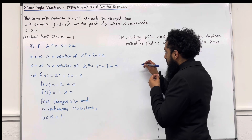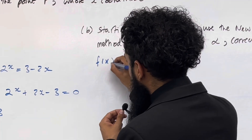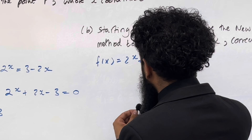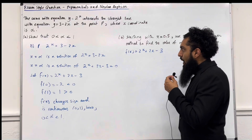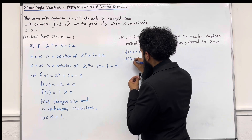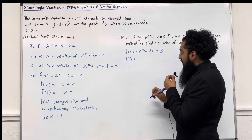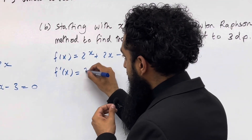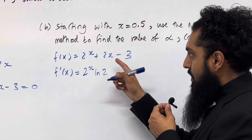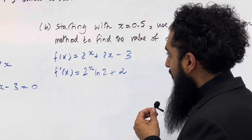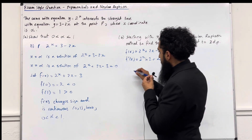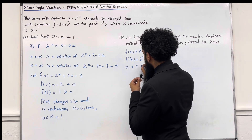The function F of x is equal to 2 to the power x plus 2x minus 3. Differentiating term by term: F dash of x is equal to 2 to the power x times ln 2, plus 2. The third term differentiates to 0. The first approximation x1 is 0.5.